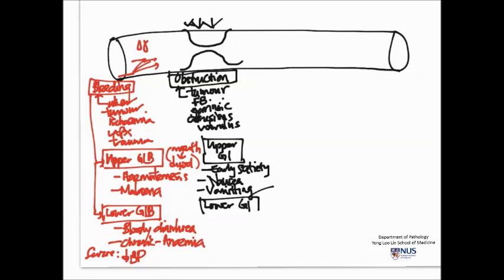Now for lower GI obstruction, they usually will present more with abdominal distension because the bowel is dilated and the contents are unable to be excreted. They can also present with constipation, sometimes even spurious watery diarrhea, and of course there may be pain or colic.